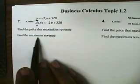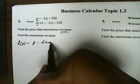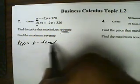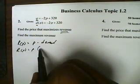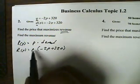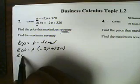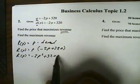We want to find the price that maximizes the revenue, and we want to find the maximum revenue. To find the price that maximizes the revenue, we must have the revenue function. The revenue function is based on price, and it's price times the demand function. When I distribute this, I'm going to get revenue equals negative 2P squared plus 320P.